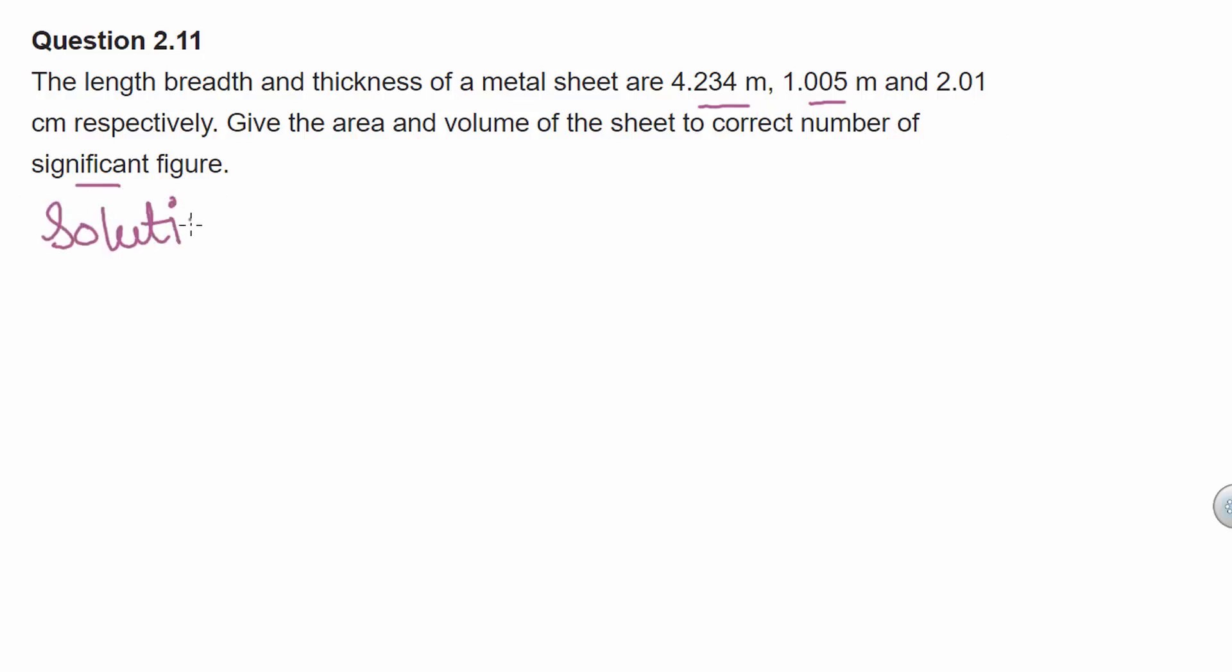Let us now look at the solution of this question. Now it is given in the question that length l is equal to 4.234 m, breadth b is equal to 1.005 m and thickness h is equal to 2.01 cm. Now these length and breadth are given in meters but this thickness is given in centimeters.